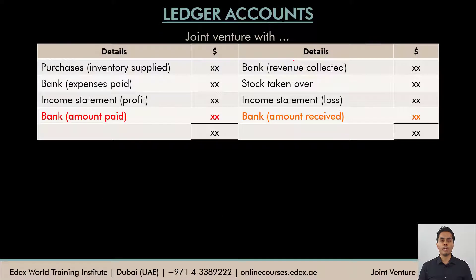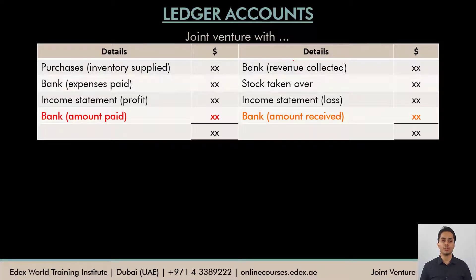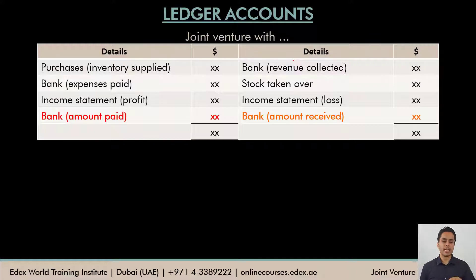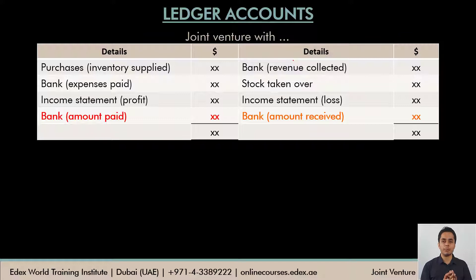This is the format of a joint venture account in the second method, where the co-venturer records only his own transactions. On the credit side, the co-venturer records any money collected through sales, any stock taken over, and any loss made on the joint venture. On the debit side, the co-venturer records any contributions made towards the joint venture — in terms of inventory, money, or expenses paid. Profit on the venture will also be debited, and the balance will either be an amount paid or an amount receivable from other venturers.